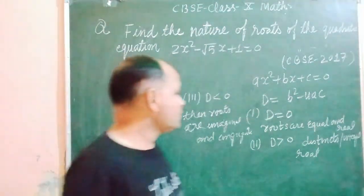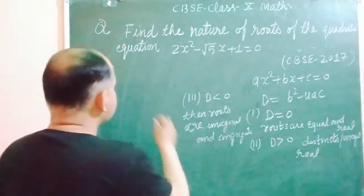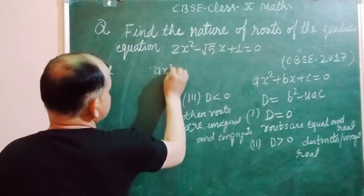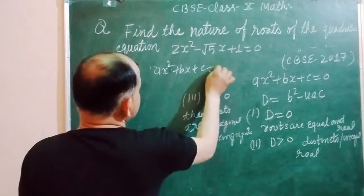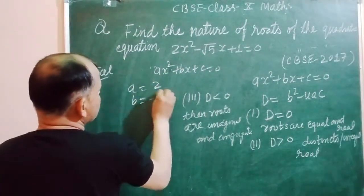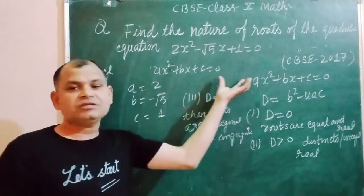So students, first we find the discriminant of the given equation. Here we have ax² + bx + c = 0. So a is equal to 2, b is minus √5, and c is 1.